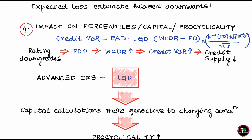Just to recap what we have discussed: in our simple model, we assume that the recovery rate — or equivalently the LGD — is independent of X. If you were to incorporate the negative correlation between X and recovery rate into your calculations, you will find that your expected loss number will go up, which means that your current estimate is biased downwards. And you will also see that the pro-cyclicality behavior becomes even more extreme.